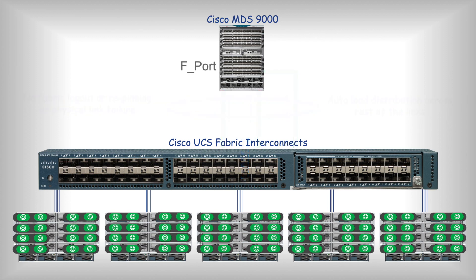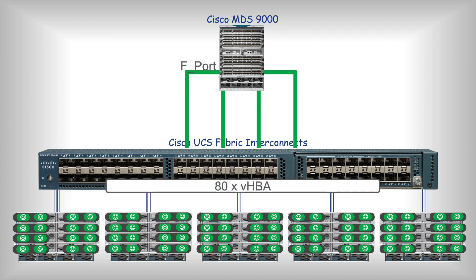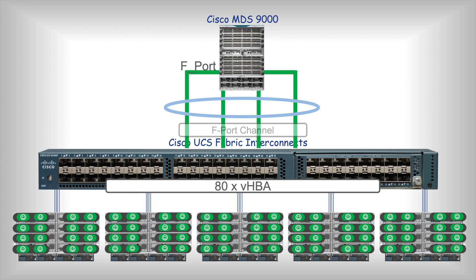In in-host mode, when Cisco UCS is connected to a Cisco upstream fiber channel network like Cisco MDS, you get to do a couple of things like fPort channeling and trunking. We still have fabric interconnect in in-host mode connected to MDS.